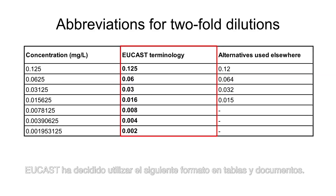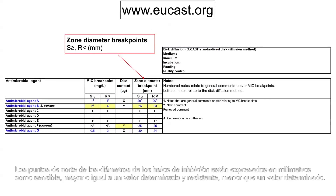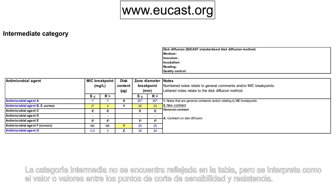EUCAST has decided to use the following format in tables and documents. Zone diameter breakpoints are expressed in millimetres as susceptible, greater than or equal to a value, and resistant, less than a value. The intermediate category is not listed in the table, but it is interpreted as the value or values between the susceptible and resistant breakpoints.